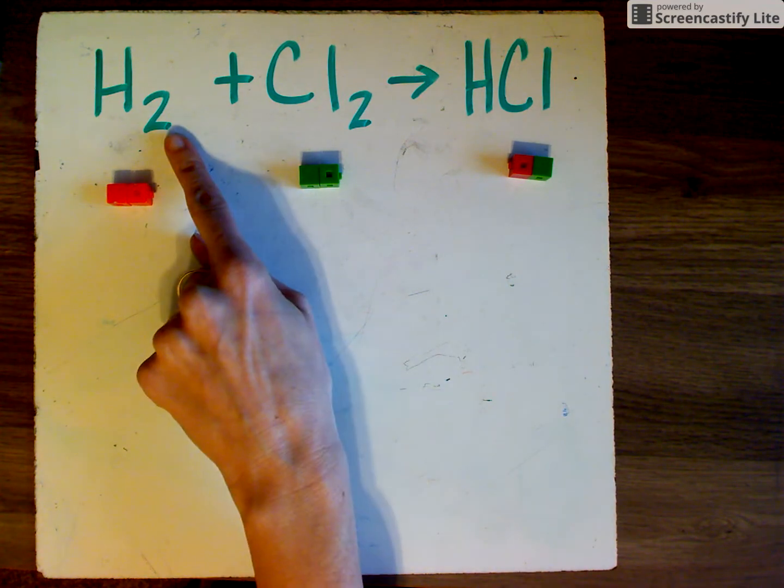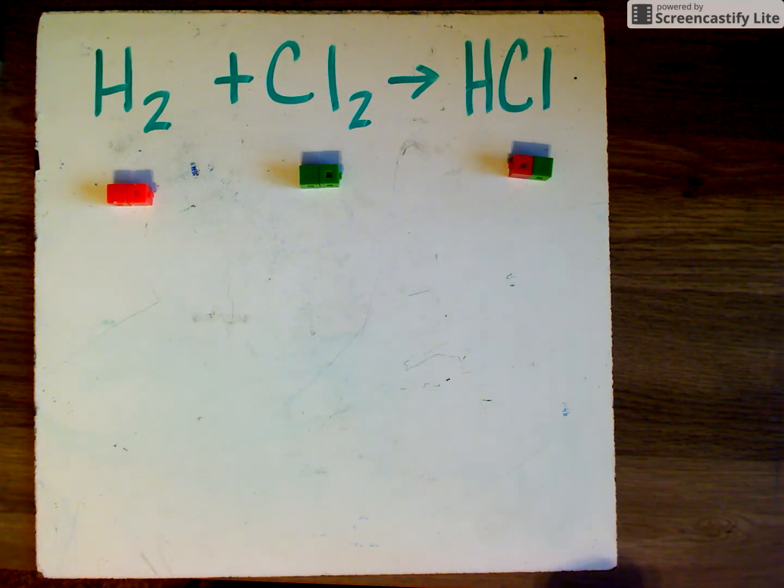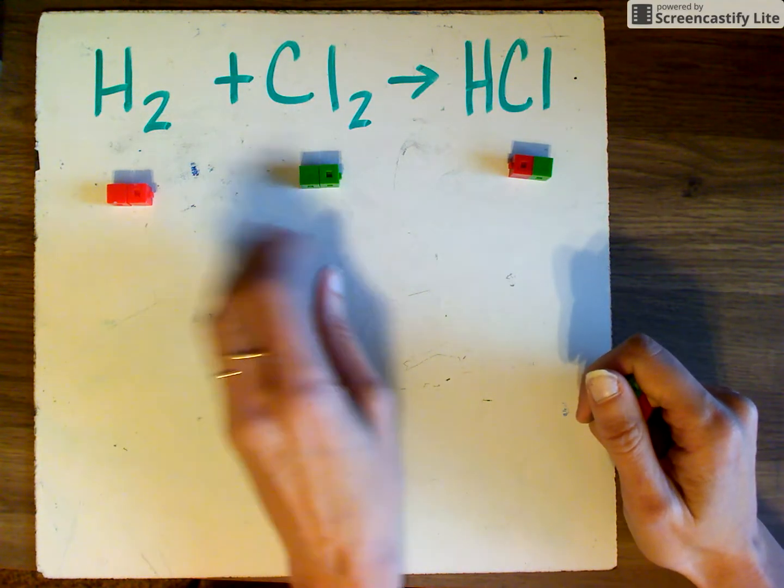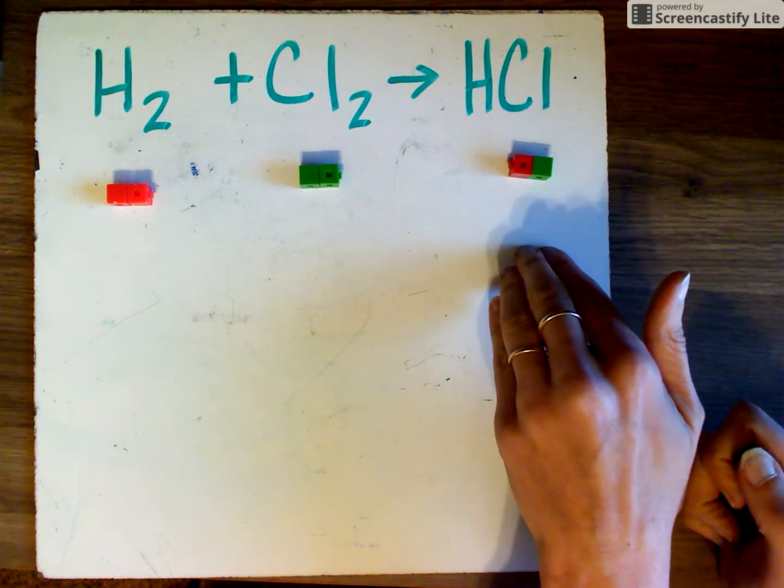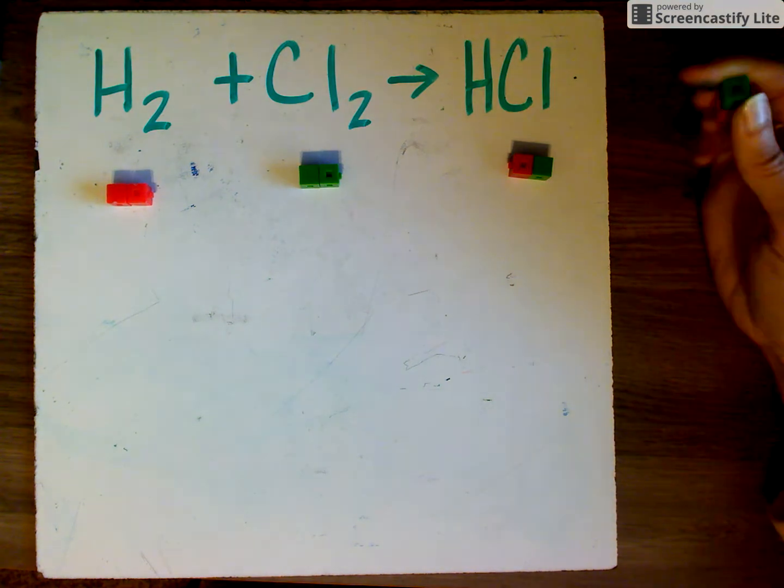We talked earlier, we can't change subscripts. So I can't just pull these apart because then we would end up with something completely different. But what I can do is change the coefficient or the number of actual molecules that I'm dealing with. In this case, since this side is less than this side, because four is greater than two, I'm going to add a molecule over here. So I'm going to add an HCl molecule.